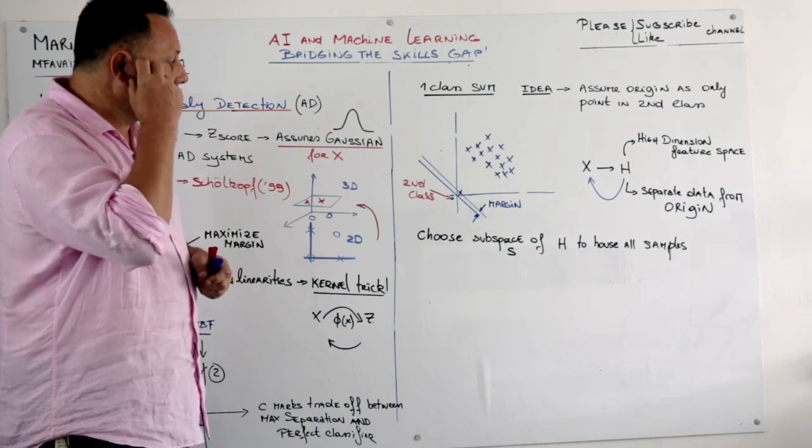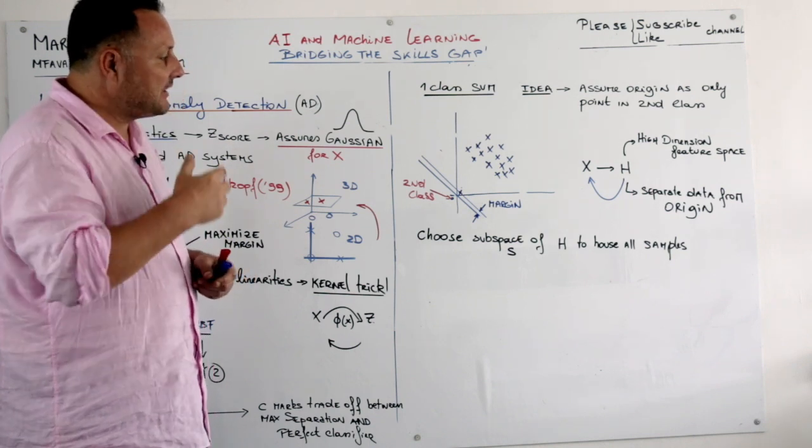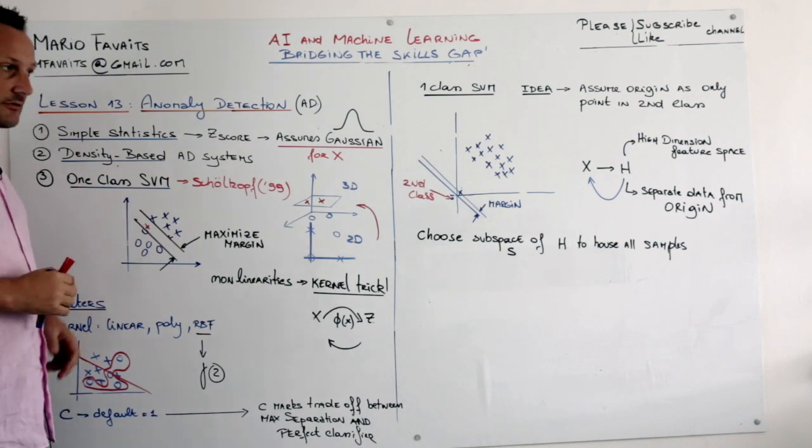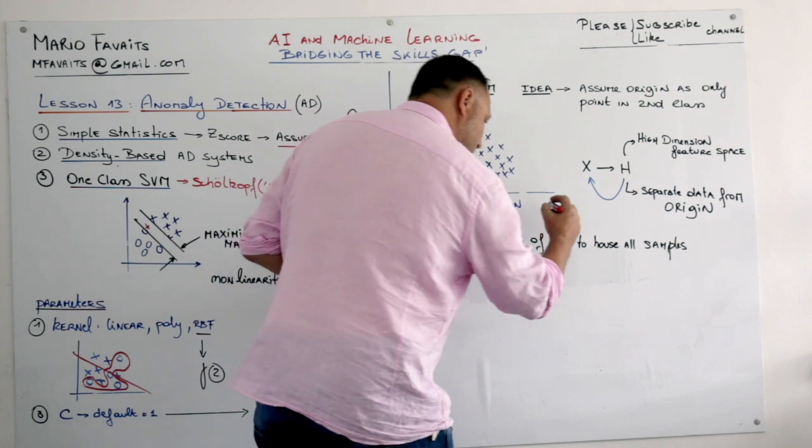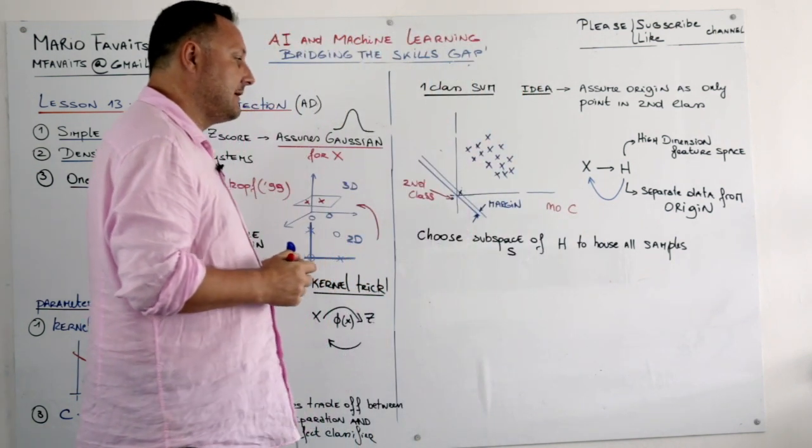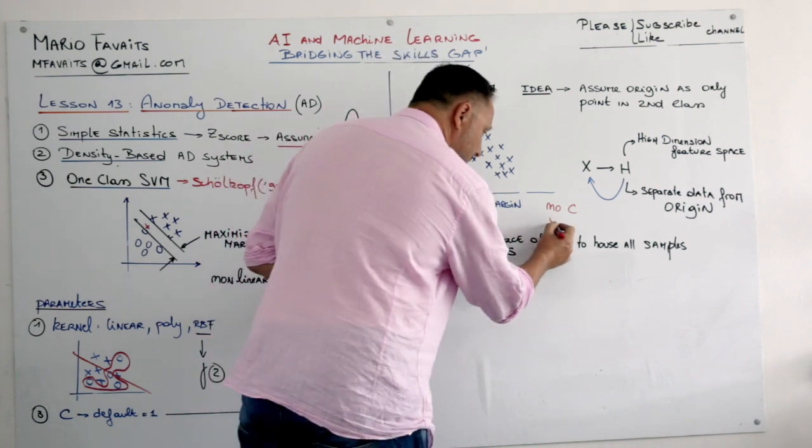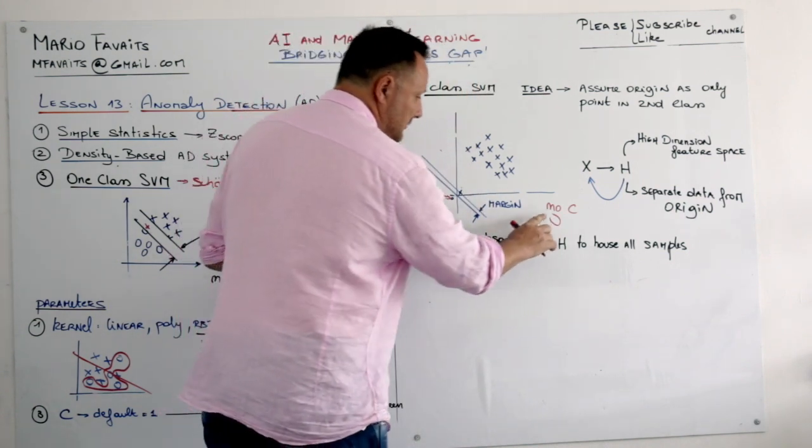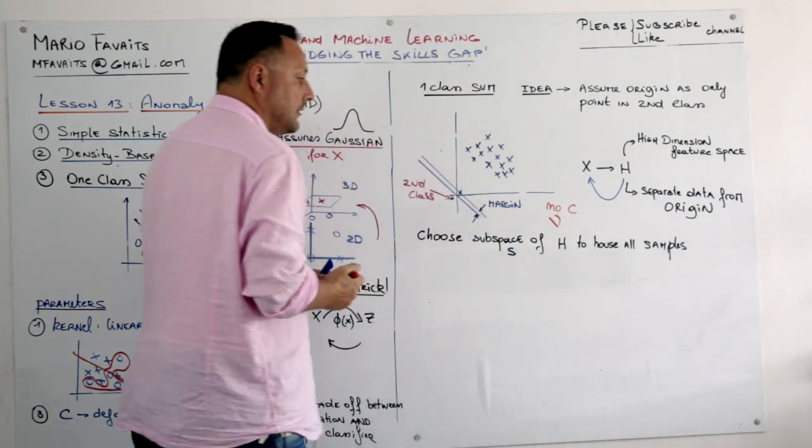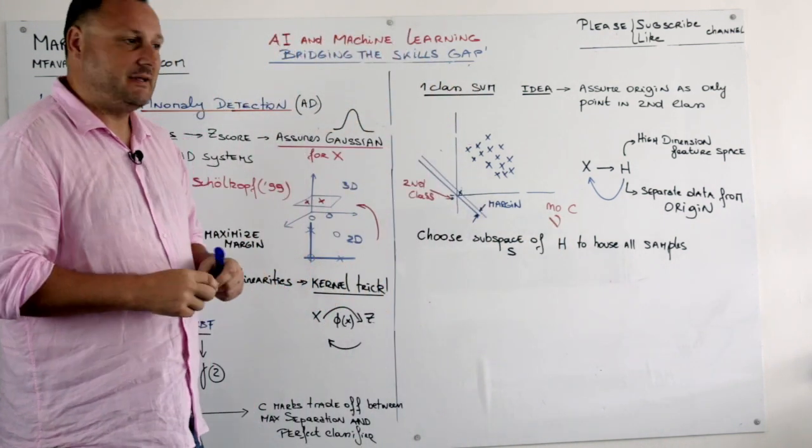Now here as well we have something similar to the C factor. But there is no C. So there is no C in one class SVM. But we have a parameter called mu. Let's call it mu. Mu replaces C in a way.